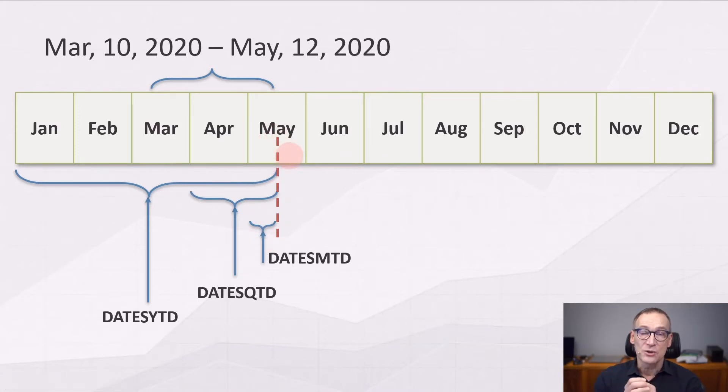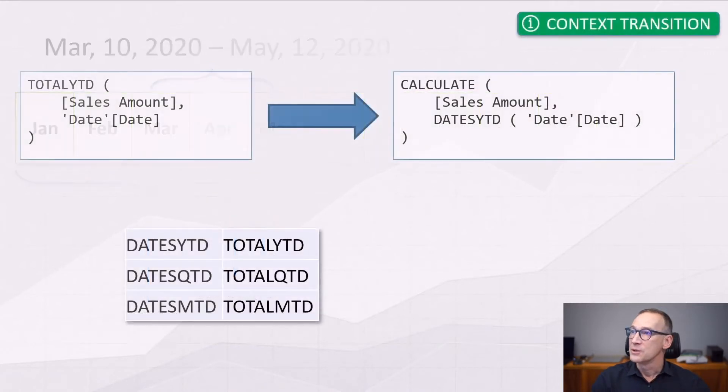The three functions also have a counterpart, a syntax sugar version of the same calculation. You can use TotalYTD, TotalQTD, and TotalMTD that do not require the usage of CALCULATE. So when you write TotalYTD of sales amount and you use date as an argument, it is translated into CALCULATE sales amount DatesYTD. We prefer not to use these syntax sugar functions because they are hiding the context transition that might be happening because of CALCULATE.